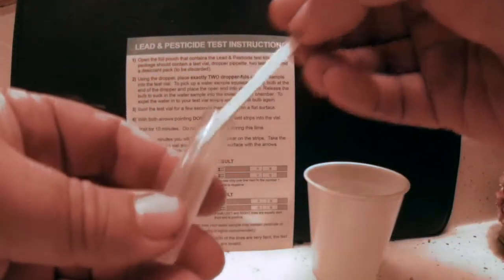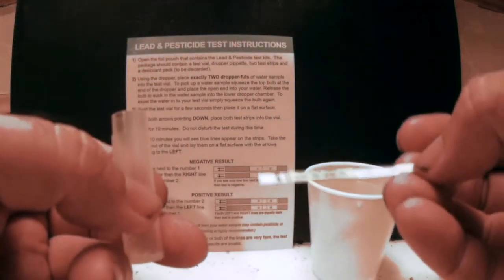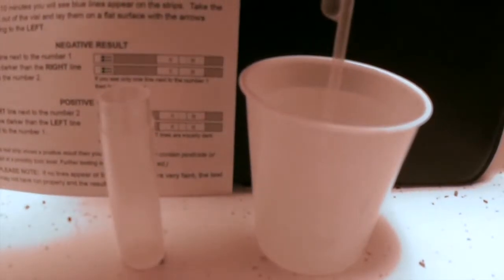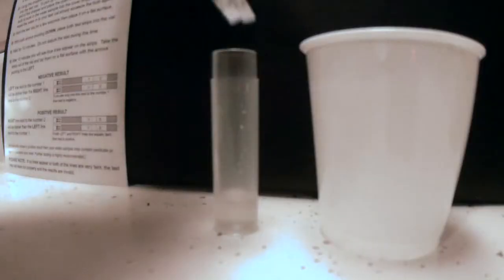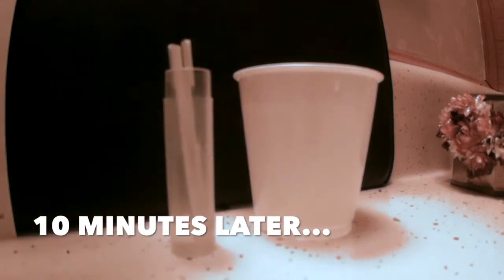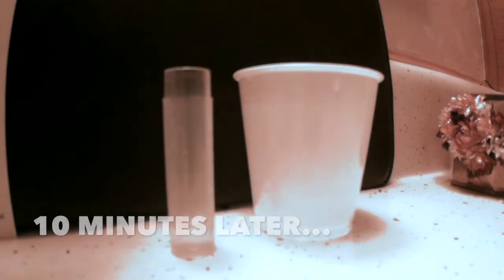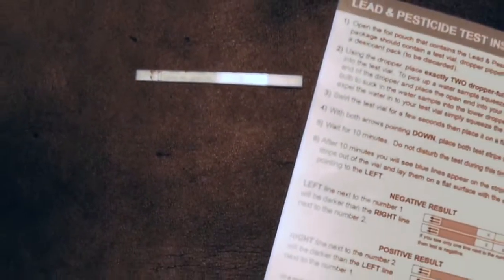You take two droppers full to the test vial, give it a little bit of a shake and then you add your test strips. Ten minutes later I open them up and you can lay it out and compare it to the test card that shows you your result level. In my case everything checked out good.